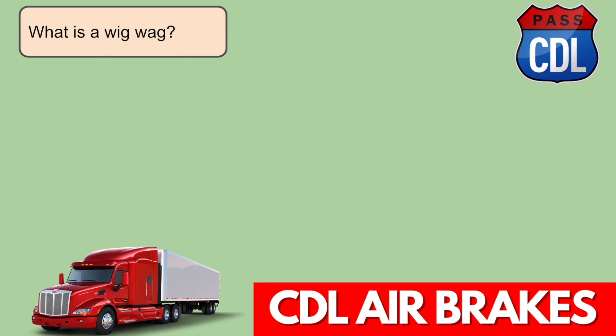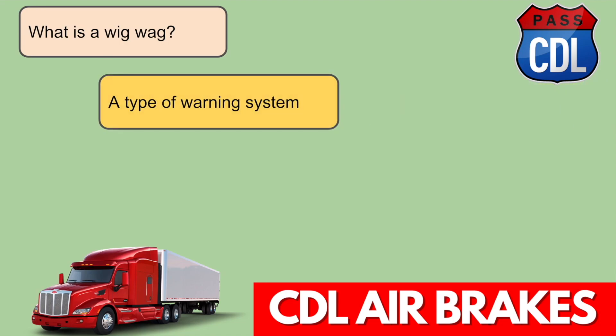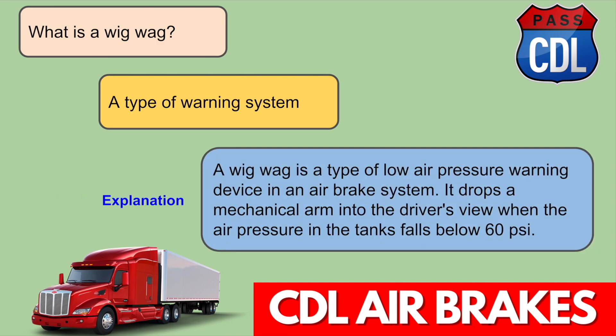What is a wigwag? A wigwag is a type of low air pressure warning device in an air brake system. It drops a mechanical arm into the driver's view when the air pressure in the tank falls below 60 PSI.